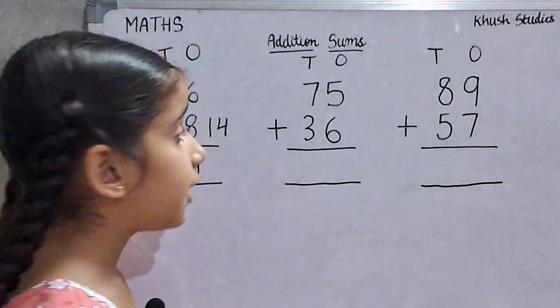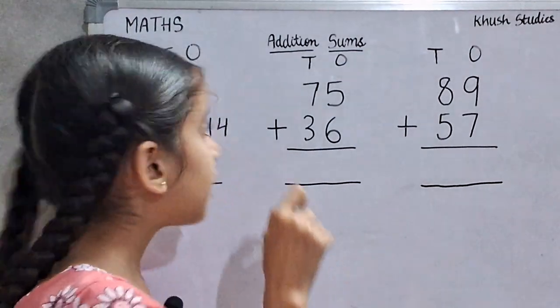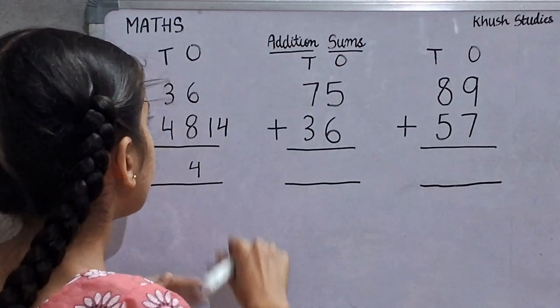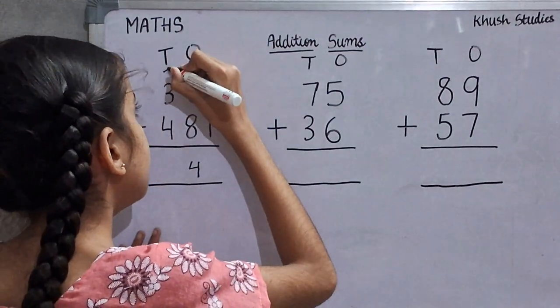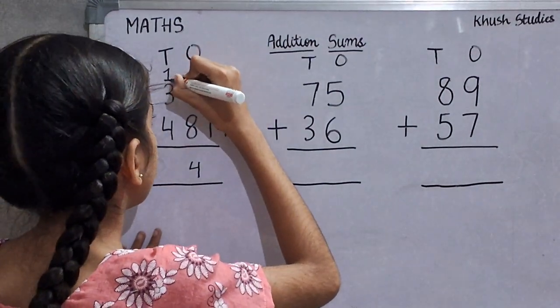We will write tens digit 1 in tens place. There. Here.